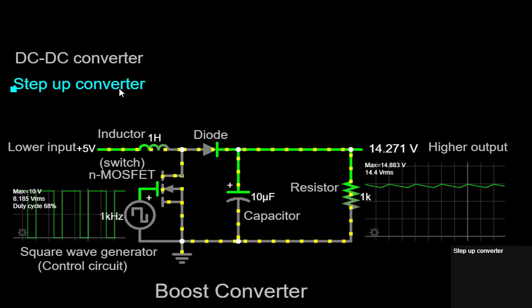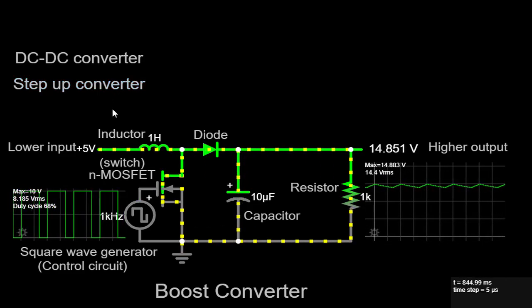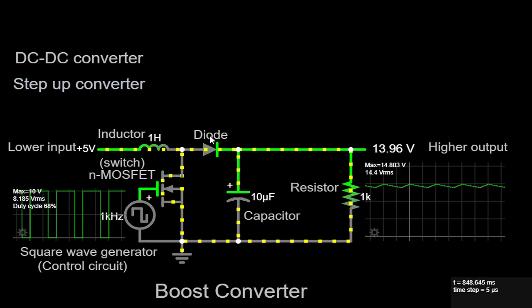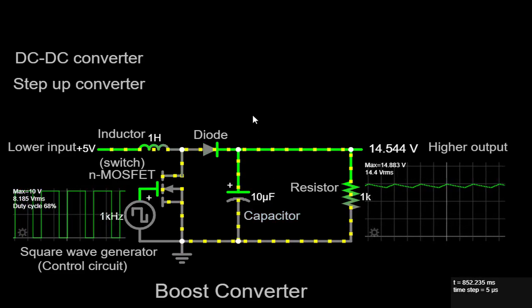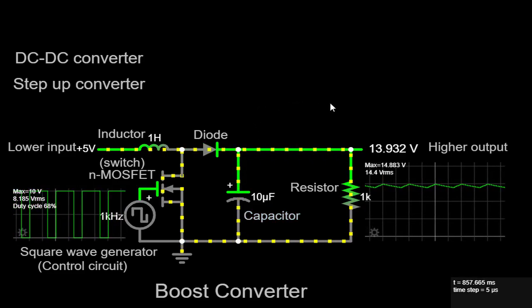The boost converter operates by storing energy in an inductor or capacitor while the input voltage is switched on, and then releasing that energy to the output load when the switch is off.